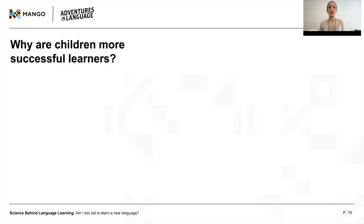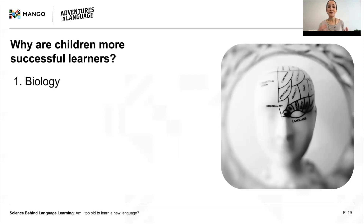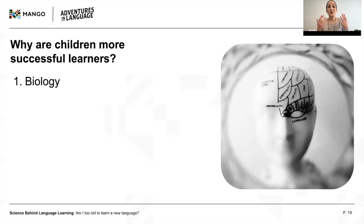The second big open question is: why do young learners tend to have better language outcomes? One very plausible explanation for age effects is biology. Hormones that affect learning and memory change around puberty, which is a commonly cited critical period cutoff. Children's brains also work differently from those of adults — they have more neural plasticity, which means it's easier for their brain cells to make new connections. Some evidence even suggests that these brain-based differences might account for a critical period for learning grammar, but not vocabulary.